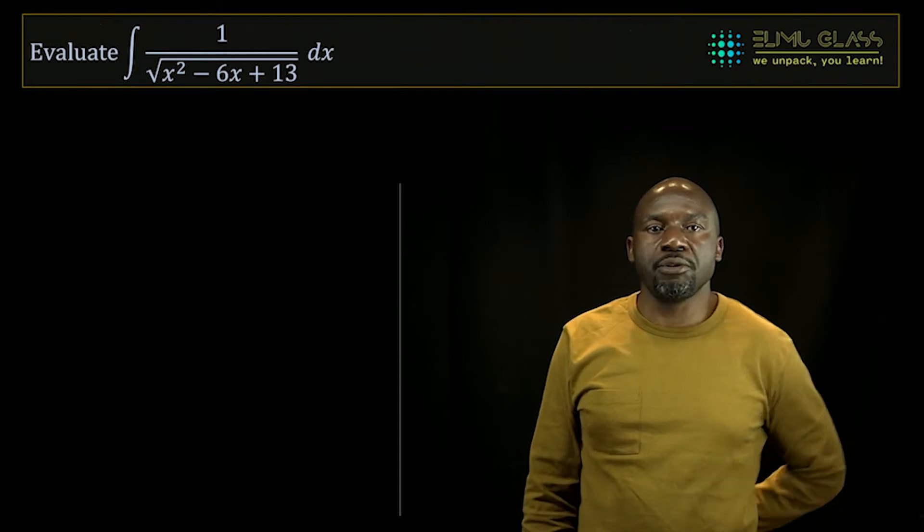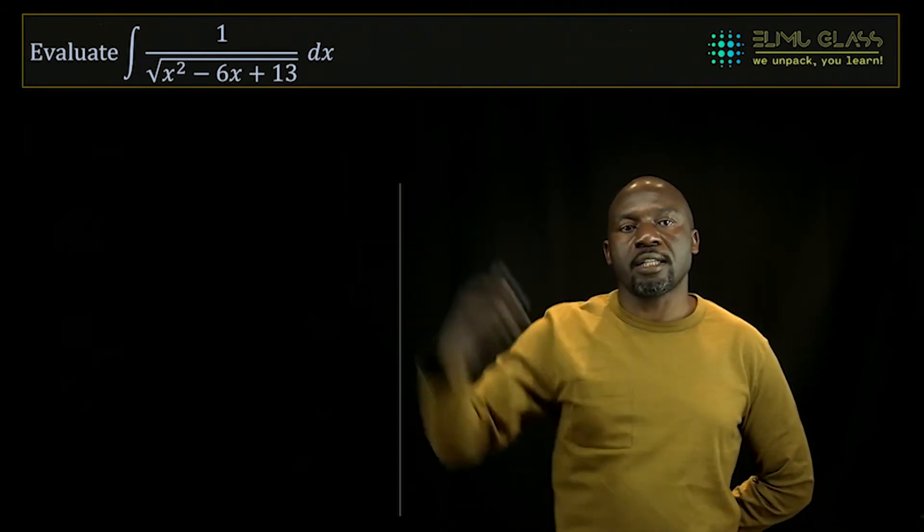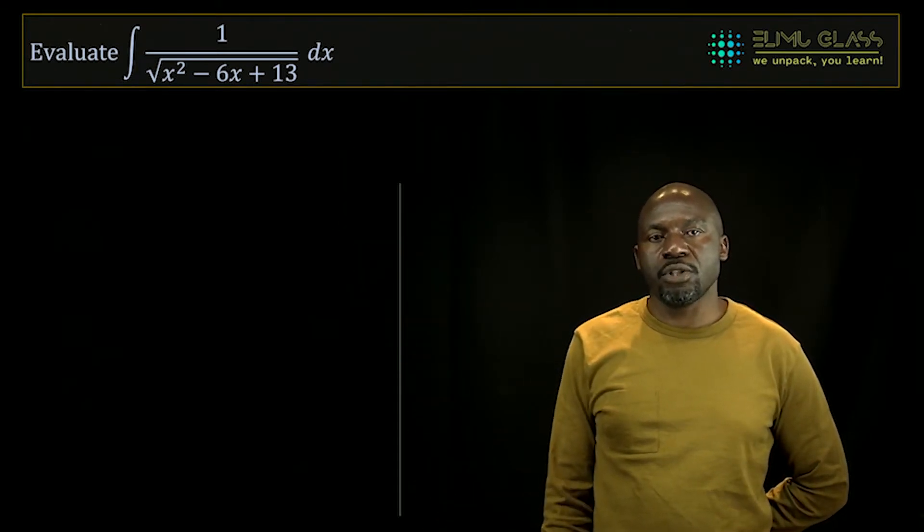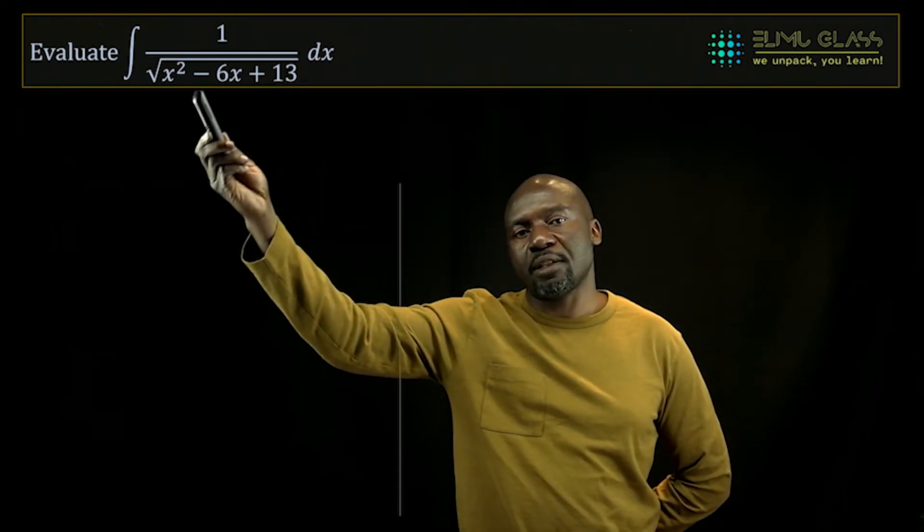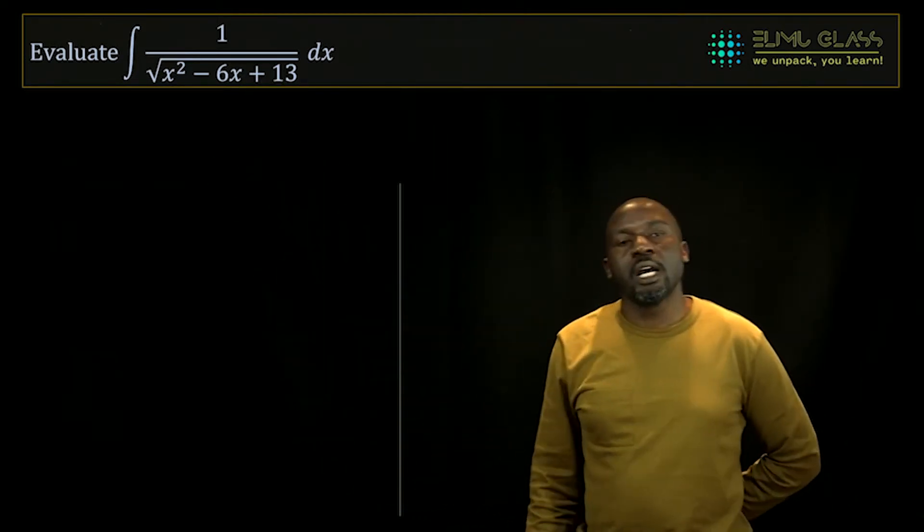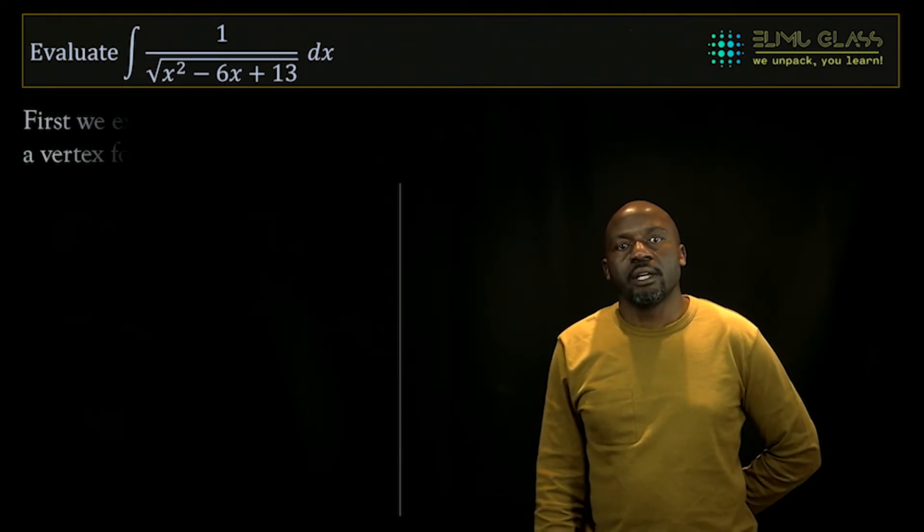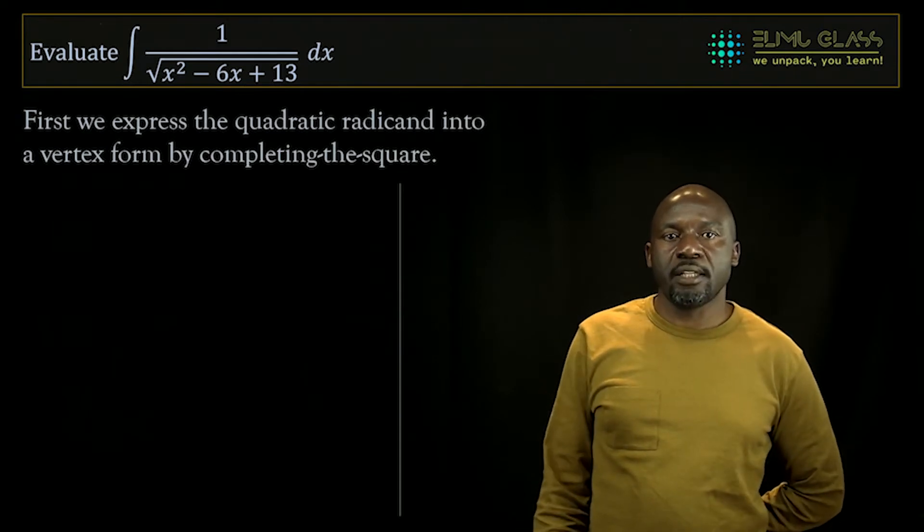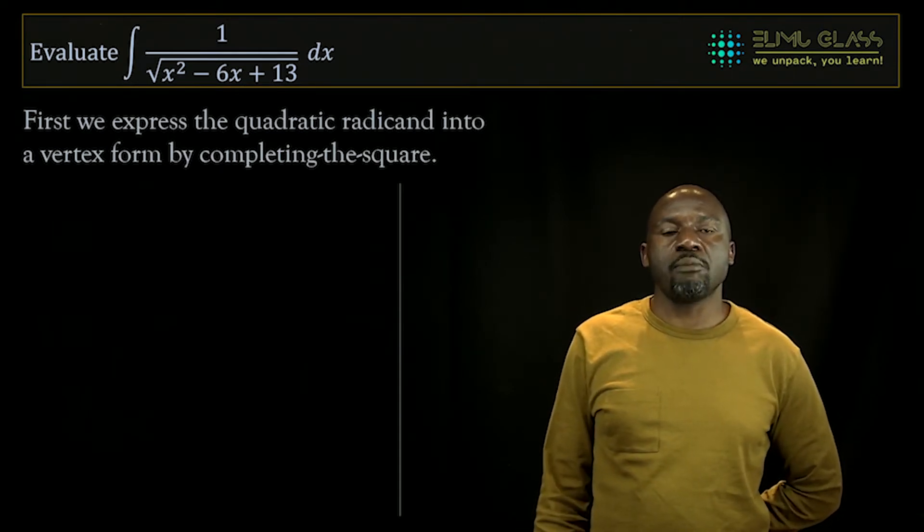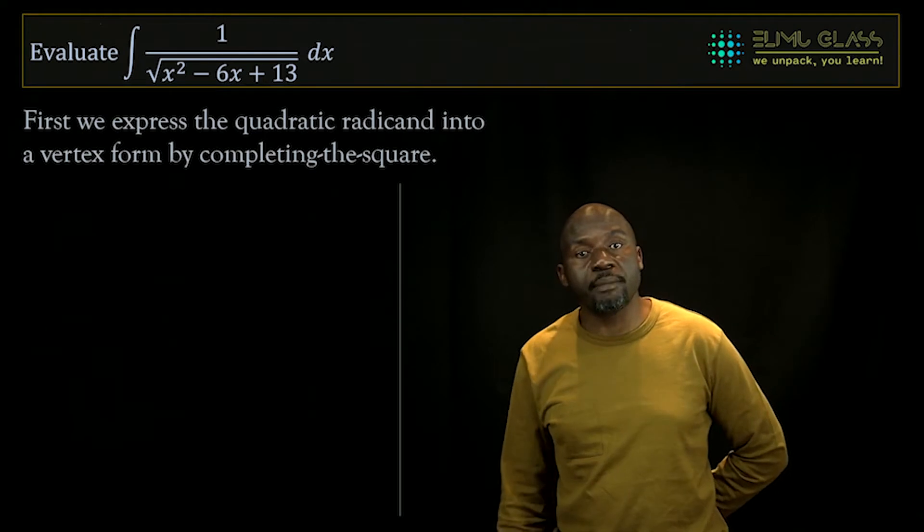The best method to use here is to express that in vertex form using the completing square method. So we are going to turn this into a vertex form of the quadratic equation, and then make use of that. So first we express the quadratic radicand into a vertex form by completing the square.